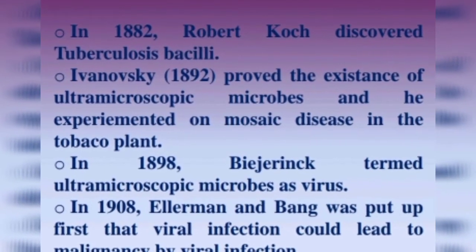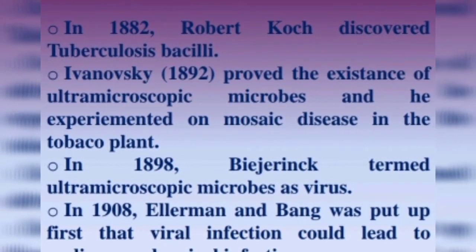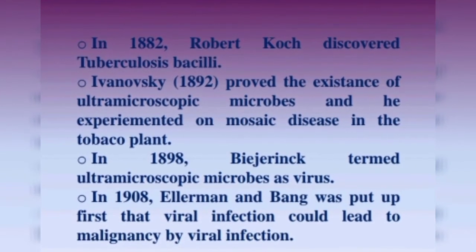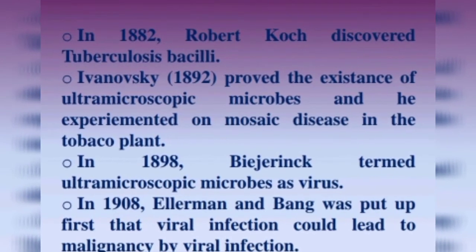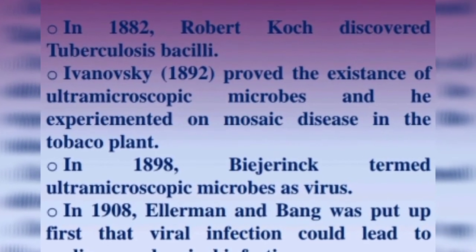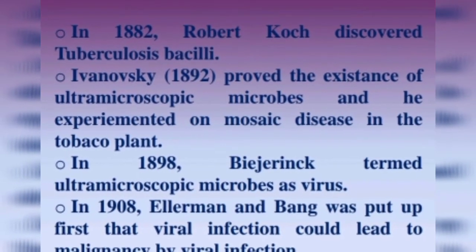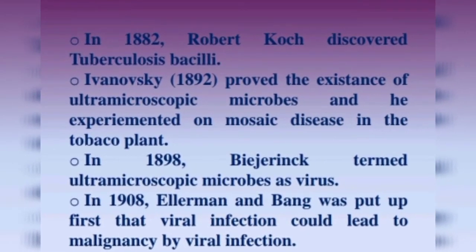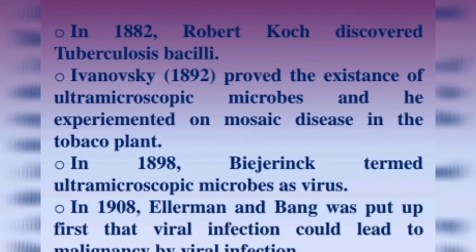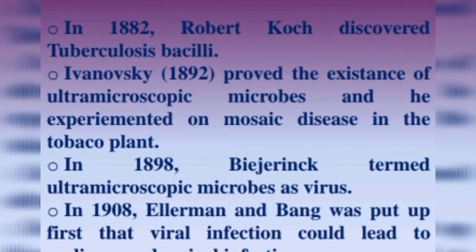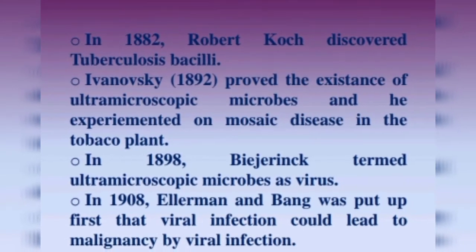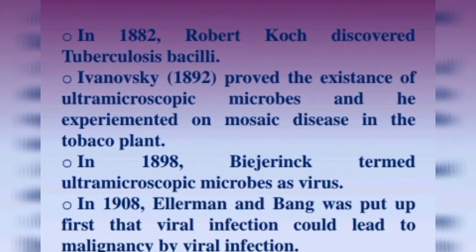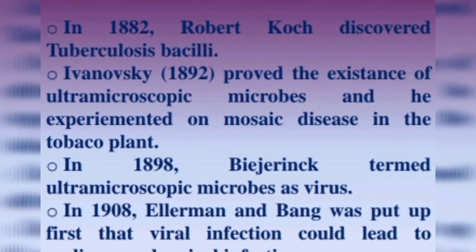Ivanovsky in 1892 proved the existence of ultramicroscopic microbes and experimented on mosaic disease in the tobacco plant. In 1898, Beijerinck termed ultramicroscopic microbes as a virus. In 1908, Ellermann and Bang first put forward that viral infection could lead to malignancy.